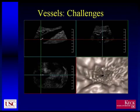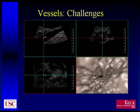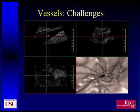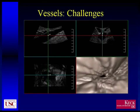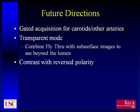There are some challenges. The inferior vena cava is extremely pulsatile in some patients, and you can easily see that you get that kind of wall motion artifact. This is something we're going to need to work on as we go forward. One of the thoughts we've had about the problem of wall motion is potentially doing a gated acquisition for the carotids or other very pulsatile structures. Another thought is potentially using this in a transparent mode, where you actually combine fly-through with subsurface images.